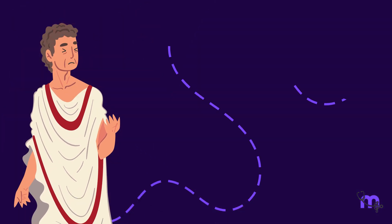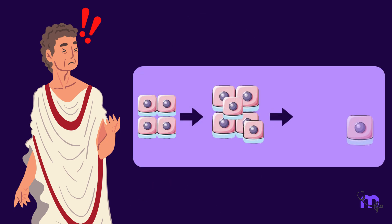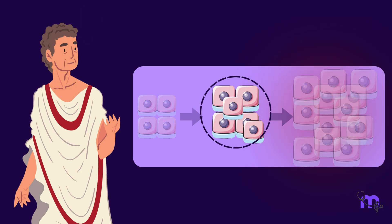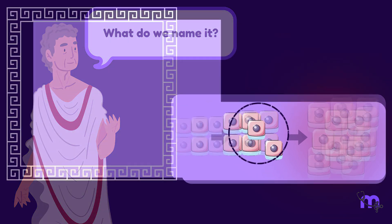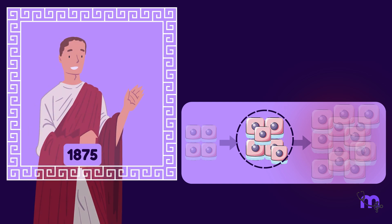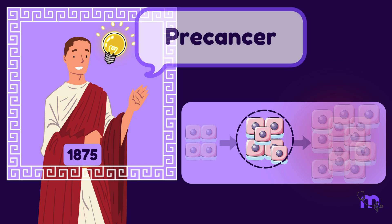Through long-term observation, the doctors made a disturbing discovery. If left untreated, these lesions invariably developed into invasive cancers. Faced with this revelation, the need for a name for these disorders arose. In 1875, a Romanian physician stepped forward with a term that would forever change our understanding of these conditions — Precancer.